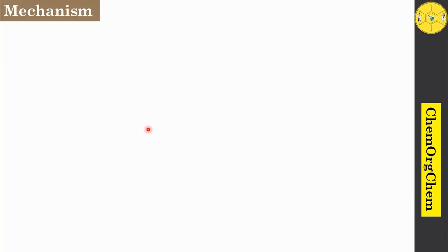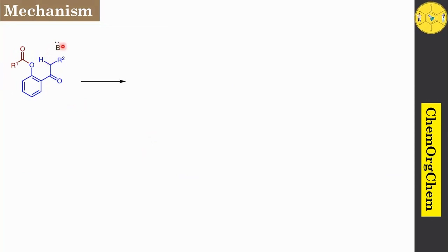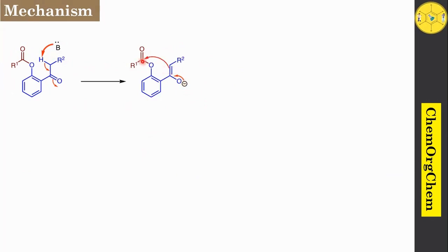To explore the mechanism behind this rearrangement reaction, consider this starting material. Here you see this alpha carbon having acidic hydrogen, since this carbon is next to this carbonyl group; therefore, this position is acidic. When you use base, it readily abstracts this proton, which produces the corresponding enolate ion. After the generation of this enolate ion, you see this negative charge, and then this π electron attacks this carbonyl carbon.